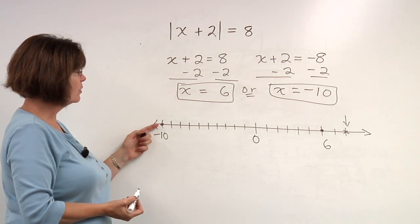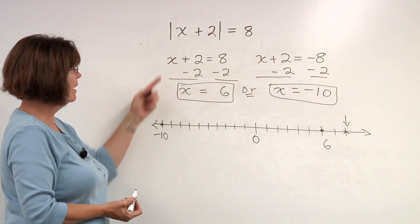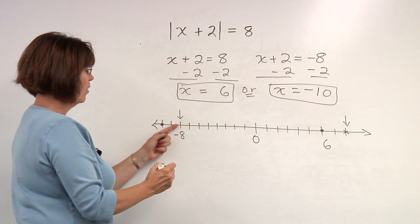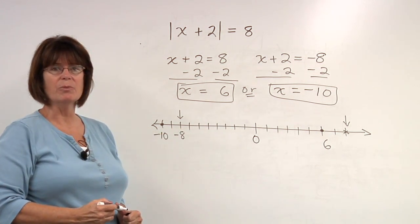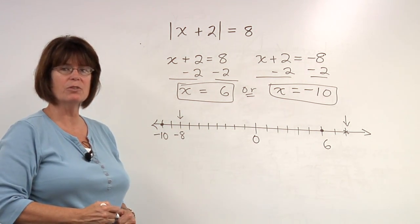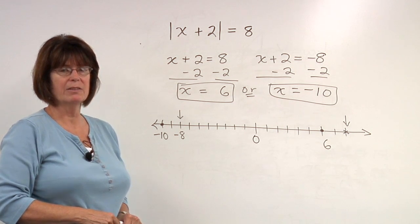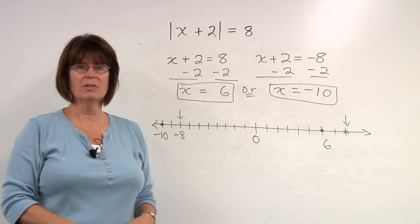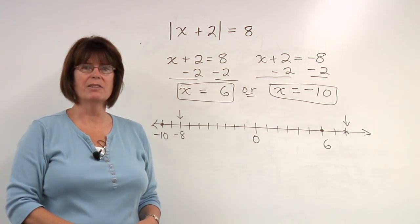If I looked at this one, x equals negative 10, and added 2, I would be here at a negative 8, also 8 units away from zero. So we can verify that those solutions make sense. That's how to solve absolute value equations. I'm Nancy E.T. Johnson, mathematics teacher.